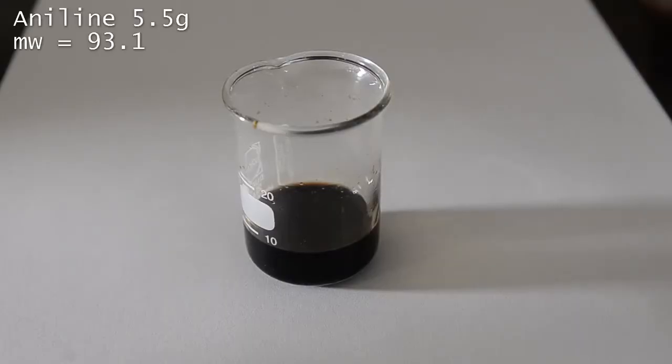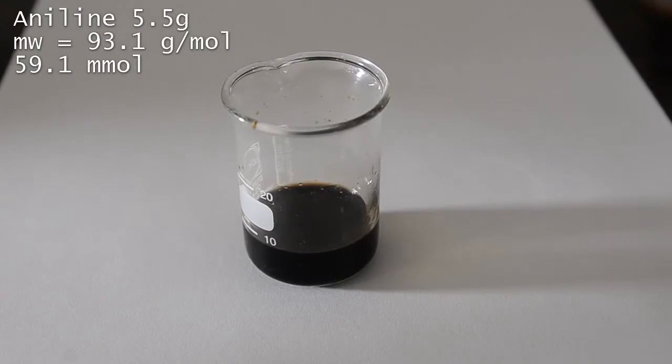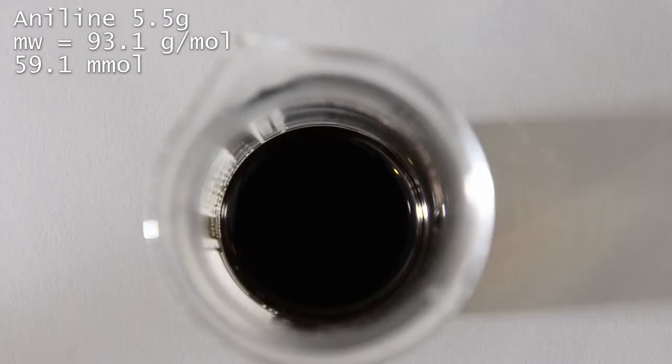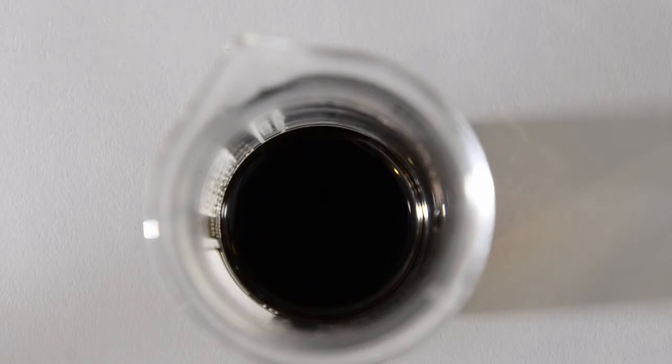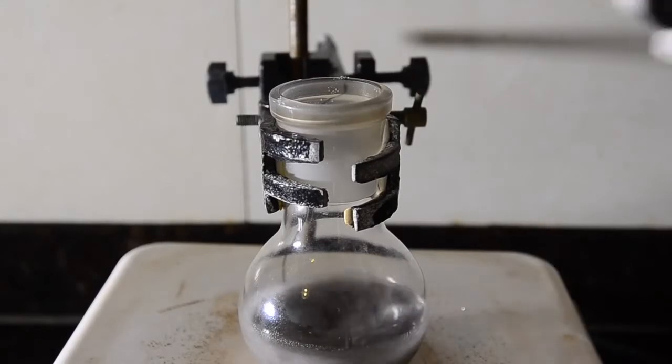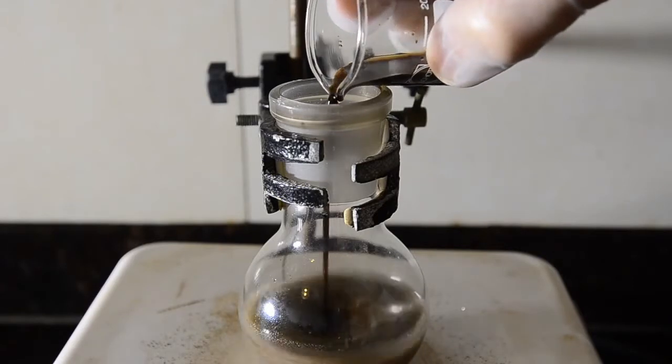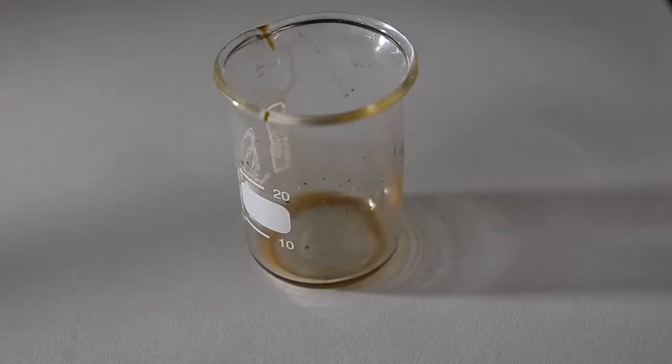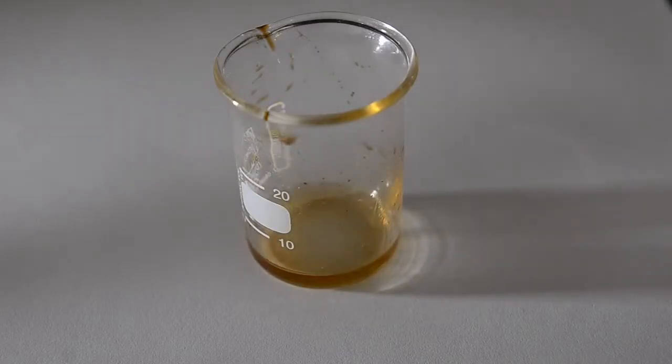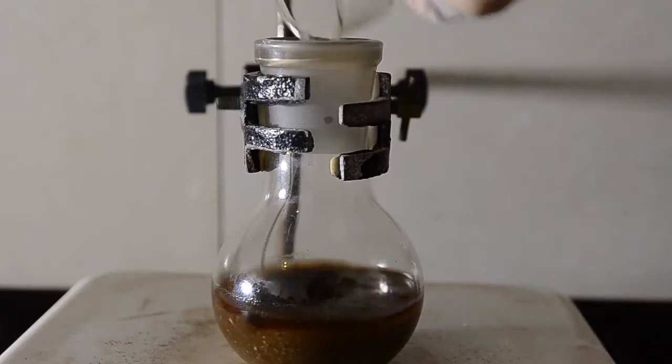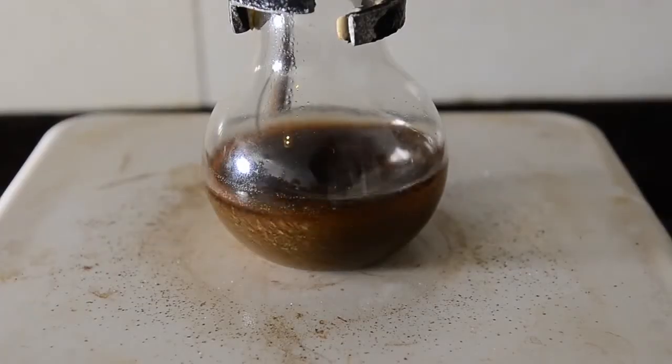Now measure out a slight molar excess amount of your chosen aniline. We're using 5.5 grams of aniline here. As before, we're testing to see how quality affects the yield, so we're using an old bottle of aniline which is a dark color with a brownish tint. It is however dry. Add the aniline to the stirred suspension in the flask. Use a small amount of toluene to wash the beaker and add to the flask. Here's our mixture. Nothing is going to happen just yet.